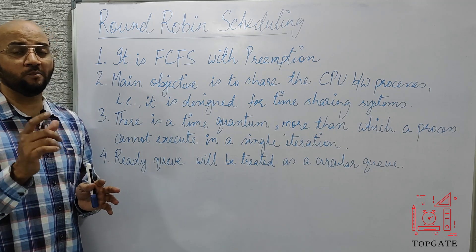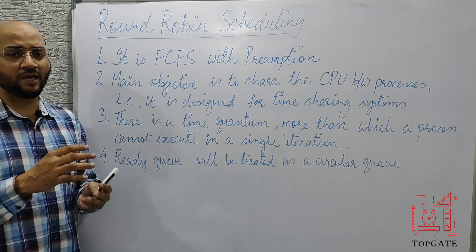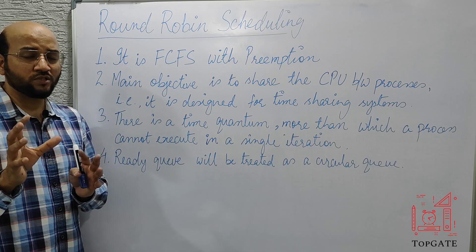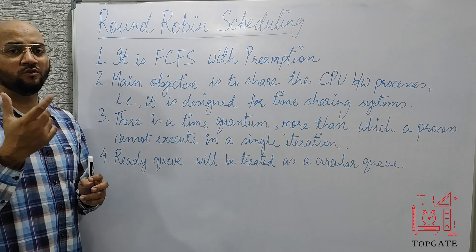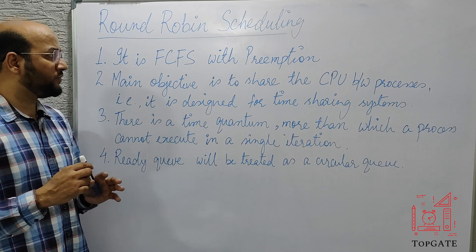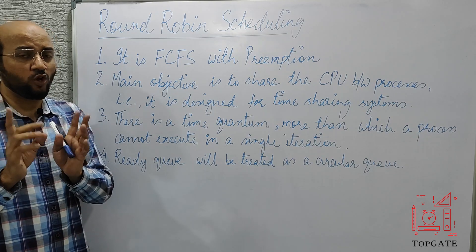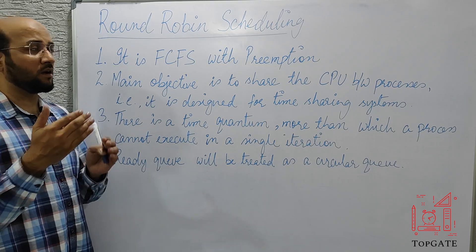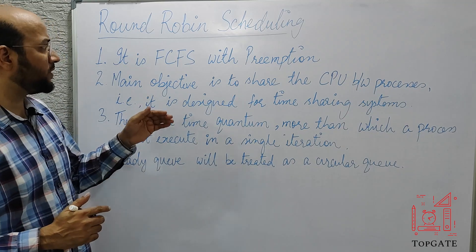A process cannot execute for more than a time quantum. So if a process has a very high burst time but the time quantum is two, the process must leave the CPU after two time units. So if we add preemption to FCFS — which was a non-preemptive algorithm — we get the Round Robin scheduling algorithm.